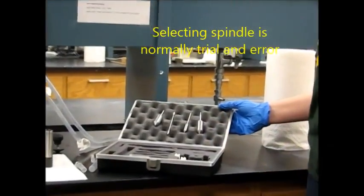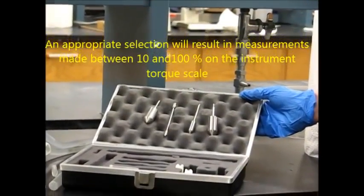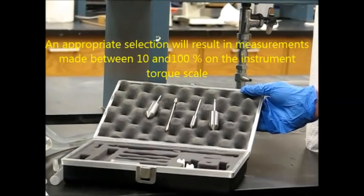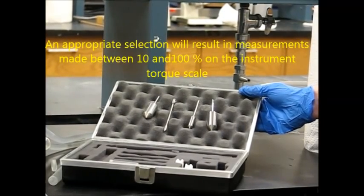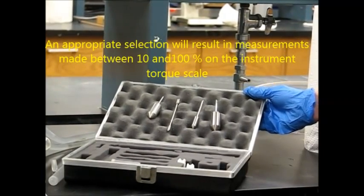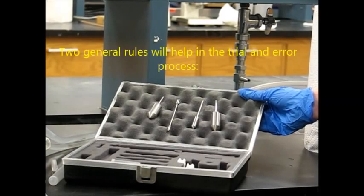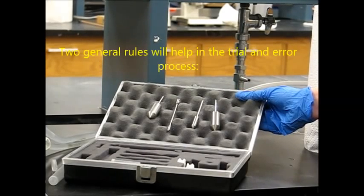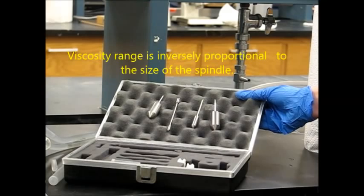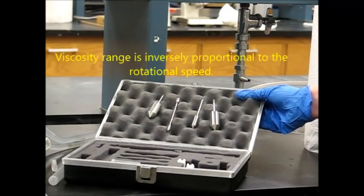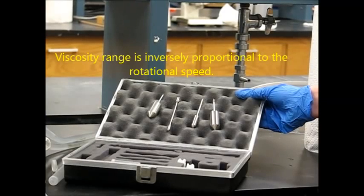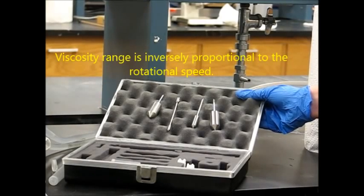Selecting a spindle is a trial and error process. An appropriate selection will result in measurements made between 10 and 100% on the instrument torque scale. These two general rules will help in the trial and error process. First, viscosity range is inversely proportional to the size of the spindle, and second, viscosity range is also inversely proportional to the rotational speed.